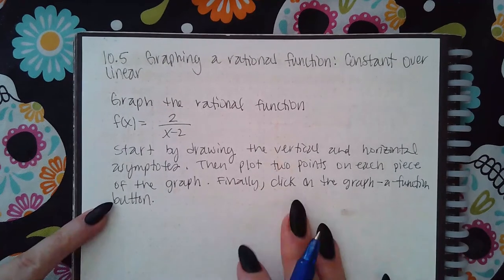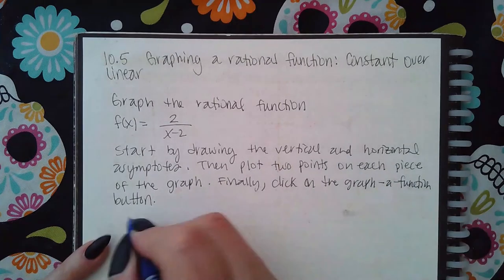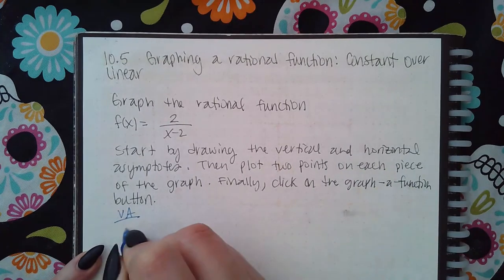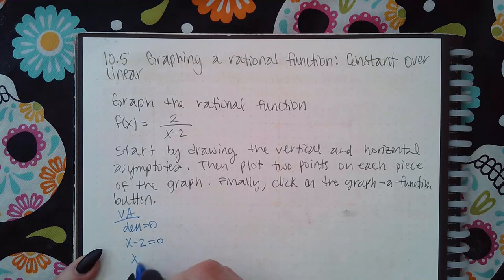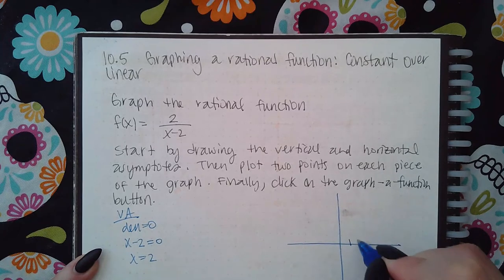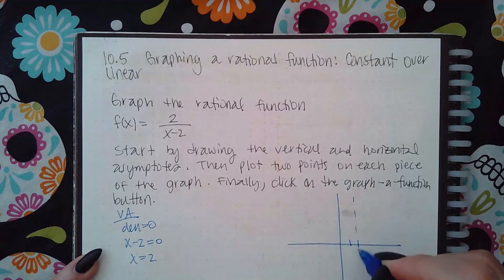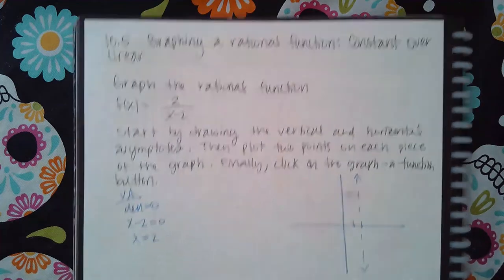When you click on it first, you're going to find the vertical asymptotes. To find those, you set the denominator equal to zero. So x minus two equals zero means that there's going to be a vertical asymptote at positive two. You would click on the vertical dotted line and drag it over to the positive two.